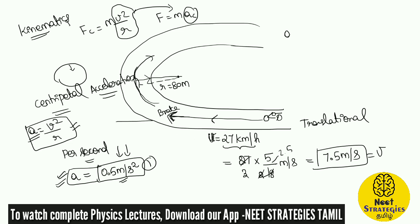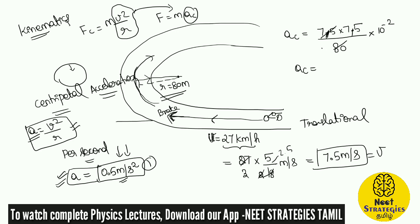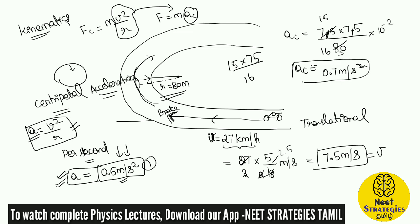We know that the centripetal acceleration ac = v²/r = 7.5 × 7.5 divided by 80. The radius of the circular path is 80 meters. So 7.5² = 56.25, divided by 80. Working through the calculation, we approximately get 0.7 meter per second squared as the centripetal acceleration.